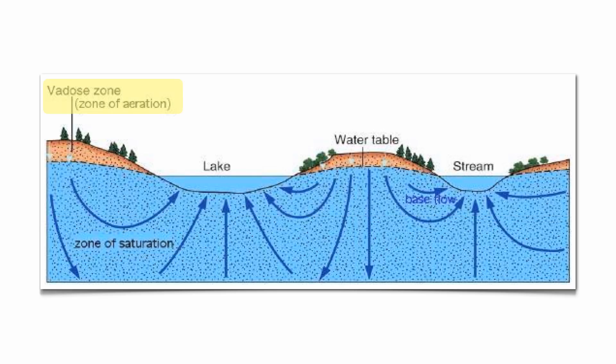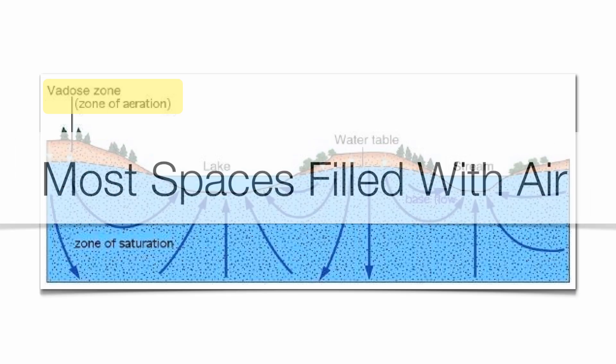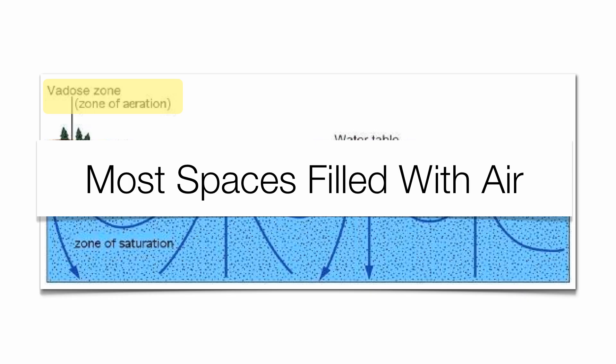Above the zone of saturation is what we call the zone of aeration. Some of the water that infiltrates into the ground passes through the zone of aeration before sinking down to build up in the zone of saturation. The zone of aeration does have a little bit of moisture — that's where a lot of our root systems are found — but it is primarily made up of air pockets, with pore spaces predominantly filled with air.